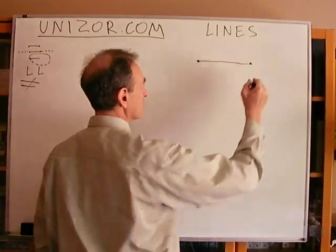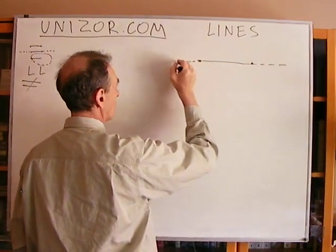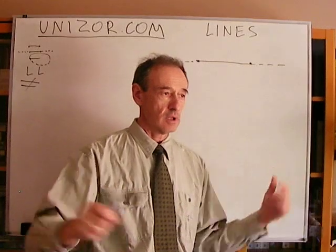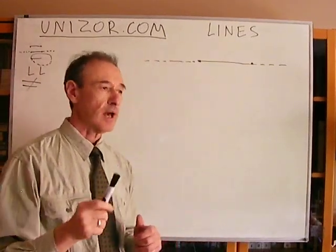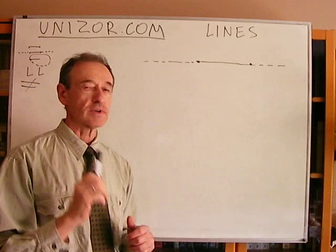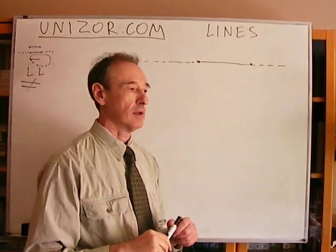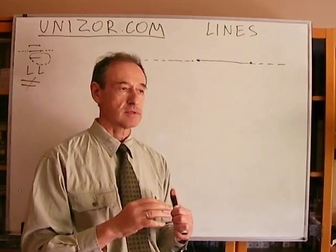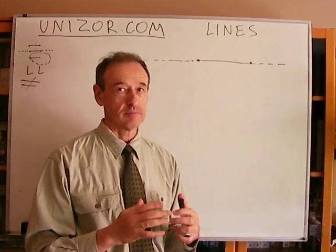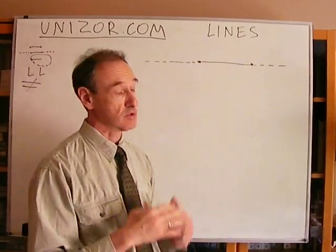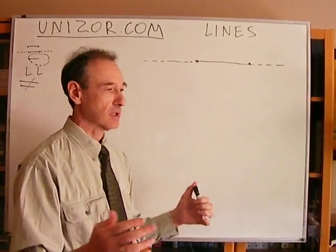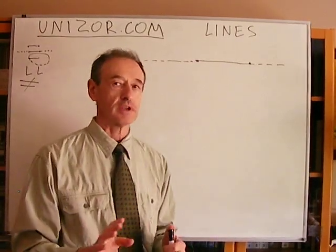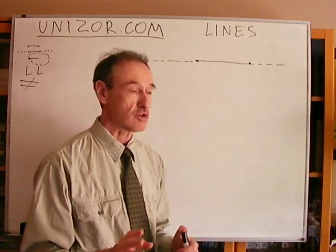The second axiom says that the segment can be expanded on both sides into an infinite straight line. A straight line was actually explained by Euclid, again, not exactly in a very rigorous way. It's something which has no breadth, basically only length. He was talking about segments, and lines are something like a segment of an infinite length. But again, this is not a definition — it's kind of an explanation of what it is.